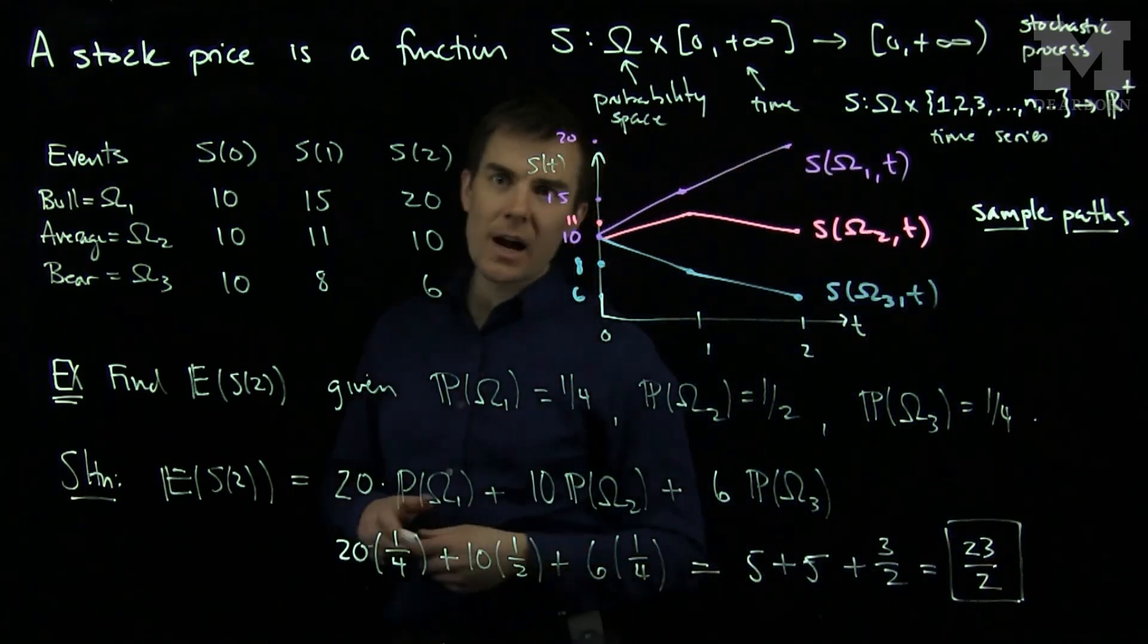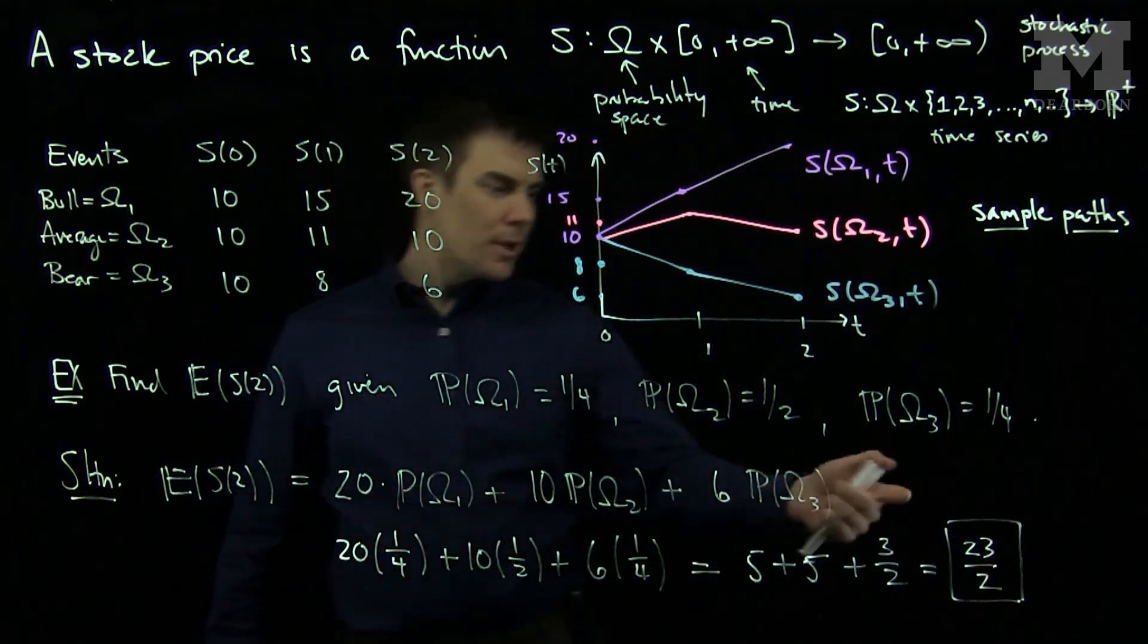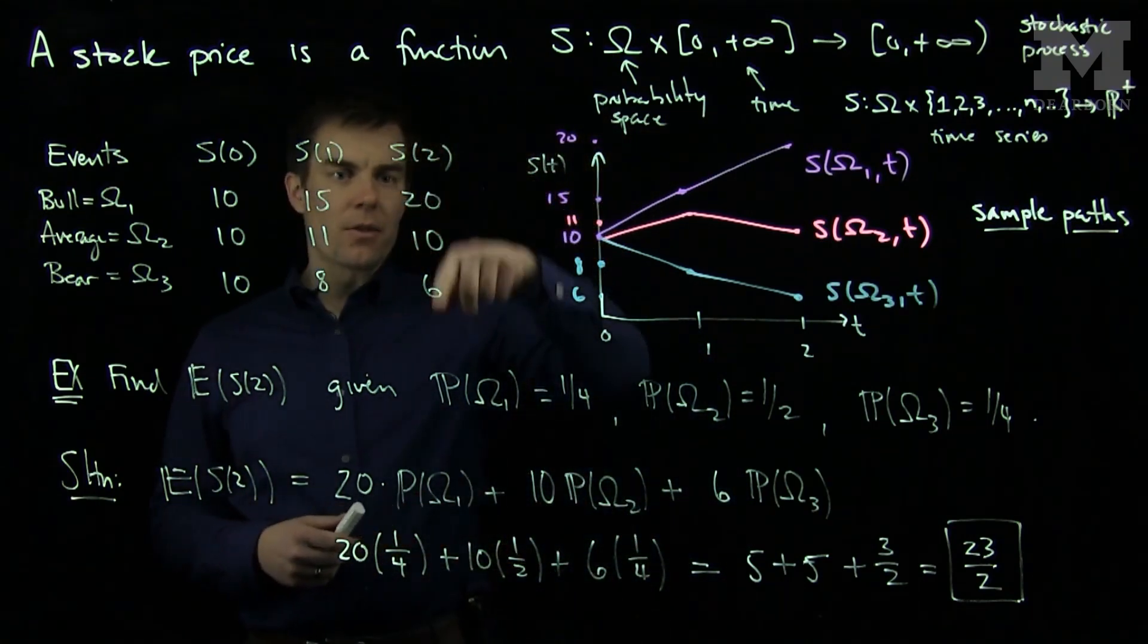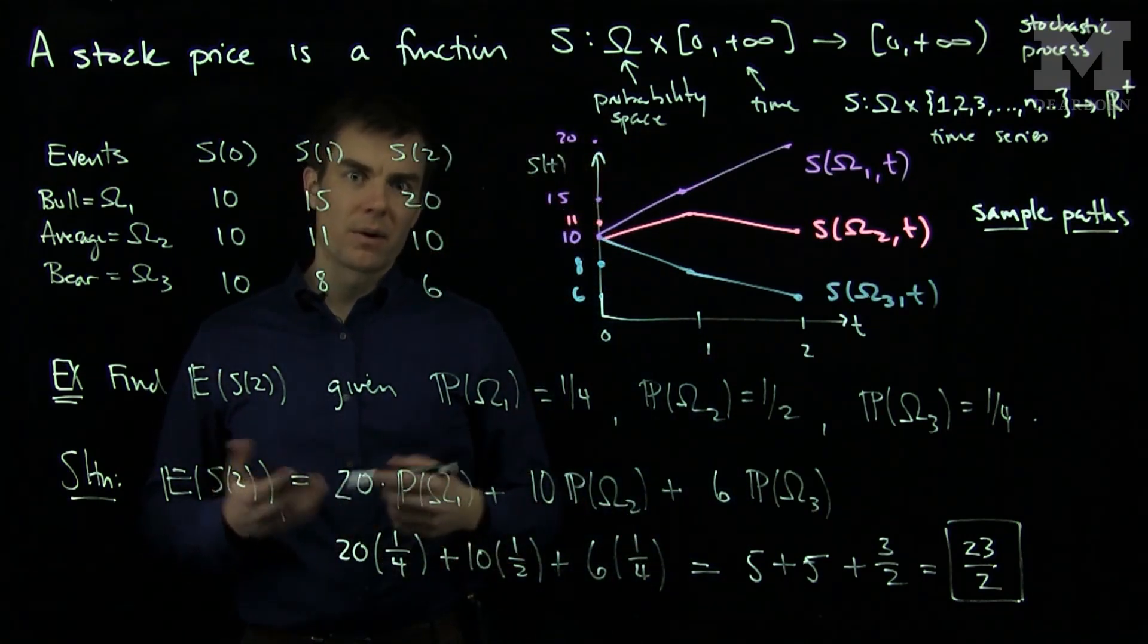So the expected value of your stock price at time two is 23 over two. So basically $11.50, given that those are your possible terminal values and the given probabilities.